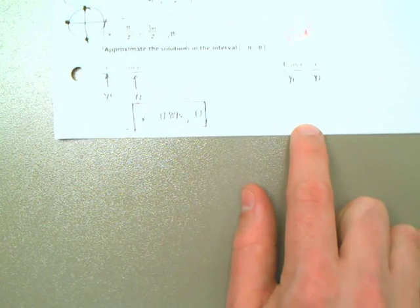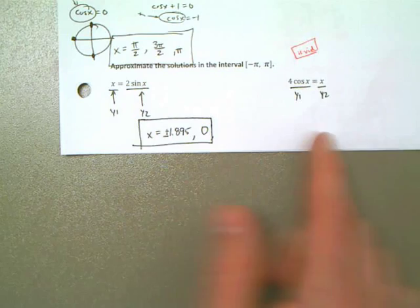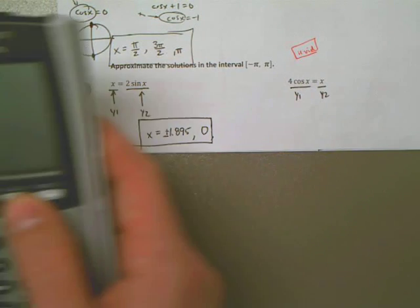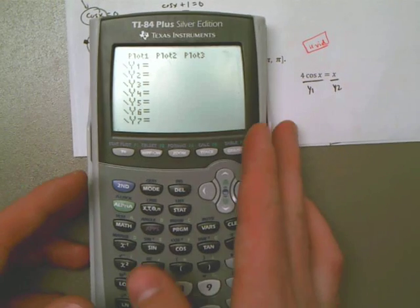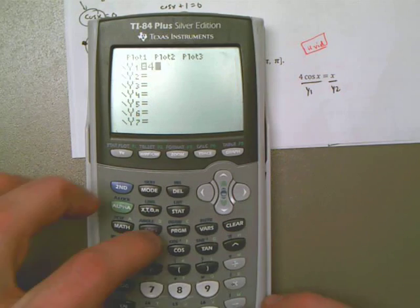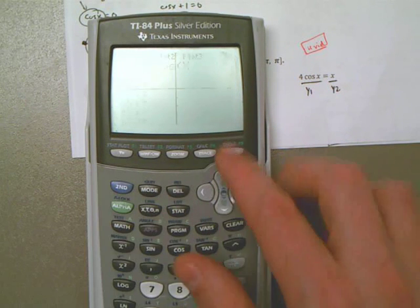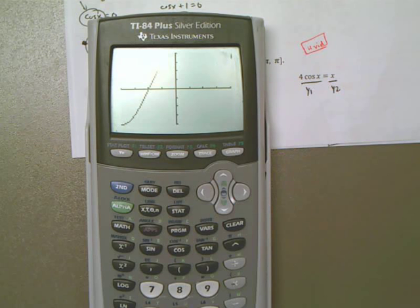Now let's do the same thing over here on the left. Or excuse me, on the right. This equation here, y1 is going to be one of the values, one of the sides of the equation. And y2 is going to be the other equation. In fact, you know what? I'm just going to switch them backwards. I've already, you know, never mind. I erased it. So, 4 cosine x and the second equation is just x. I'm going to graph those.